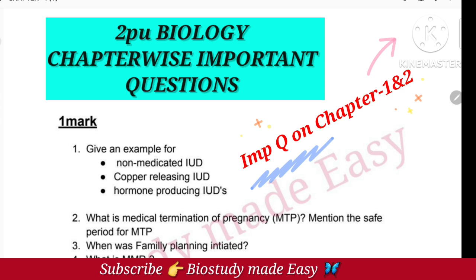Chapter 1 is Sexual Reproduction in Flowering Plants. Chapter 2 is Human Reproduction. There are important questions that are 1 mark, 2 mark, 3 mark, and 5 mark. I will upload all the expected questions and share the answers.